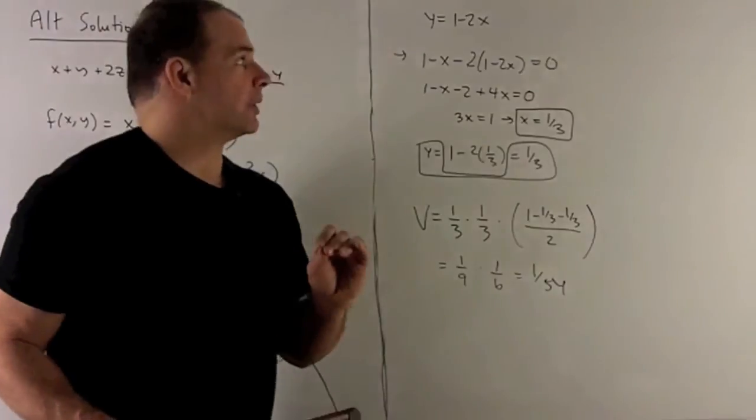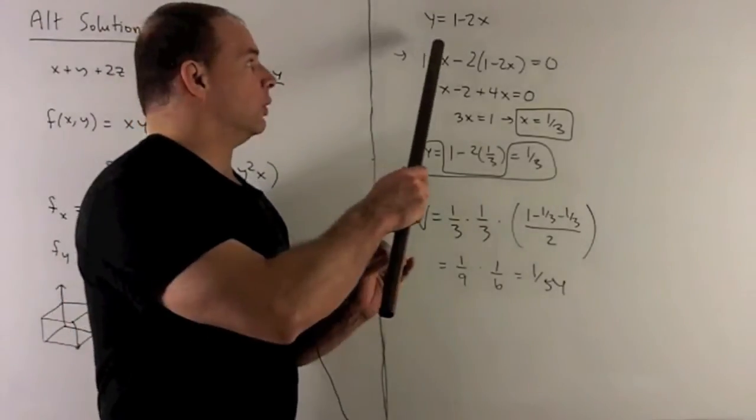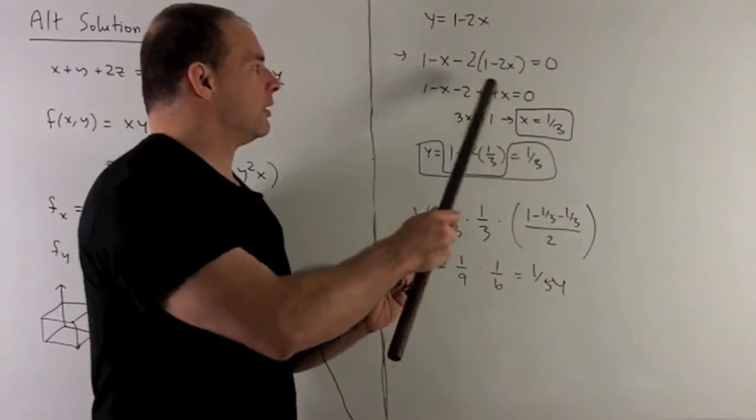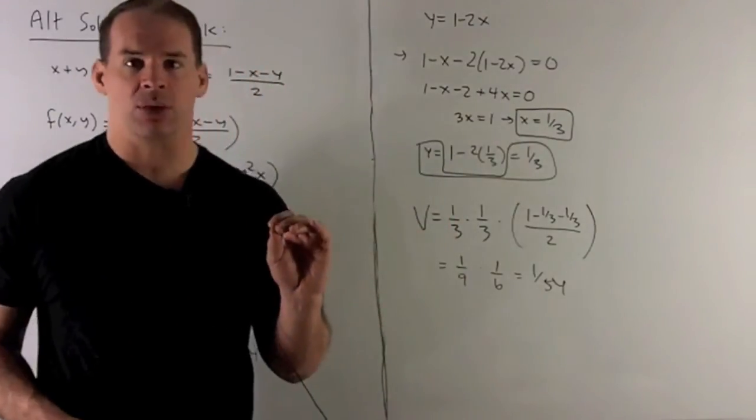So when I do that, what happens? Say we let y be equal to 1 minus 2x. I put it into the other equation, and then when you follow your nose, get x equal to 1 third.